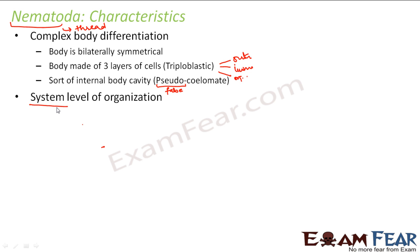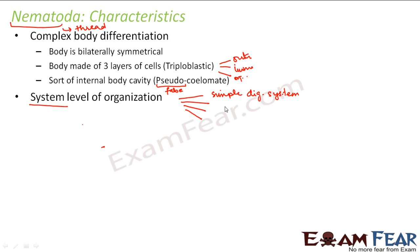What do I mean by system level of organization? In the case of platyhelminths, the digestive system was incomplete, whereas in these nematodes we have a simple complete digestive system. So let us see what all systems are present in its body. It has a simple digestive system. This simple digestive system consists of a mouth and intestine — the mouth for ingestion of food and the intestine for digestion of food.